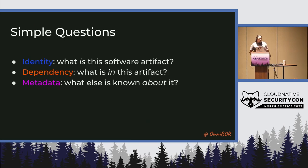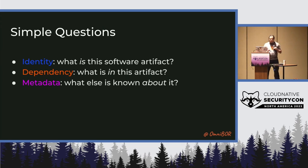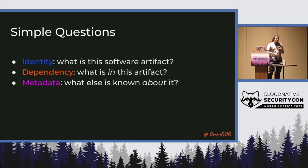There are three simple questions we came across. The first is: what is the identity of something? By identity I don't mean the URI or URL of the package or the human name we give it — what is the canonical identity of what a thing is? Dependency is what is in the artifact. Metadata is things that are not in the artifact — they are not the identity of it but are something extra that we've learned about it, so we need the ability to attach metadata to whatever we're doing.